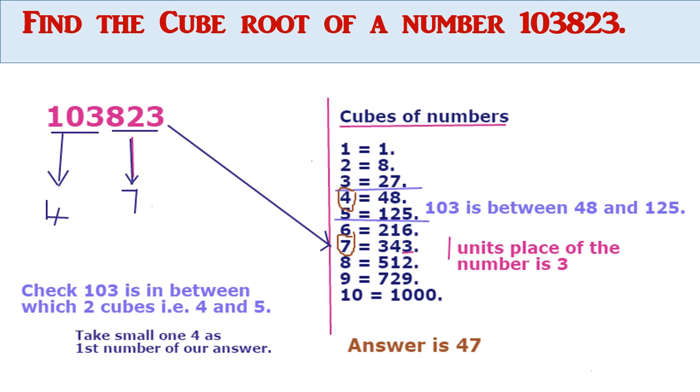Then, take the first 3 digits, 103. I am checking the cubes of numbers. 103 is in between 2 cubes, that is 4 cubed and 5 cubed. 103 is in between 48 and 125. Therefore, we take the smaller number, that is 4. The first number of our answer is 4, the second number is 7. Therefore, our answer is 47.